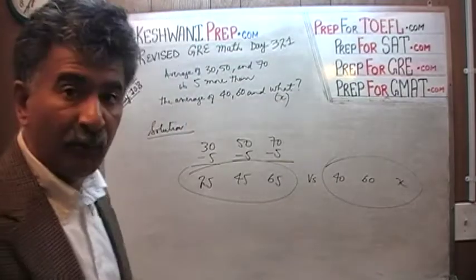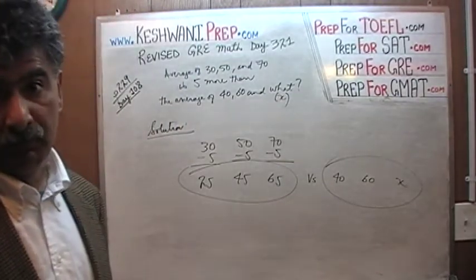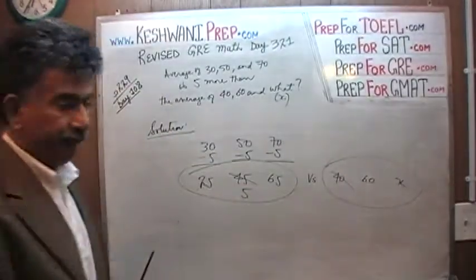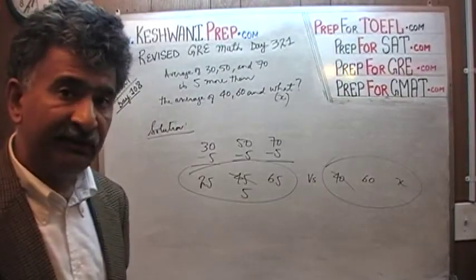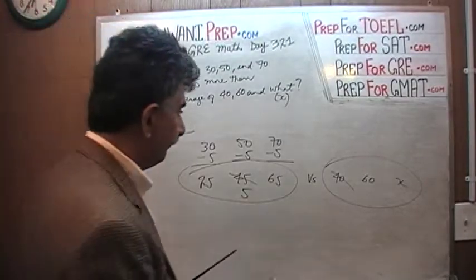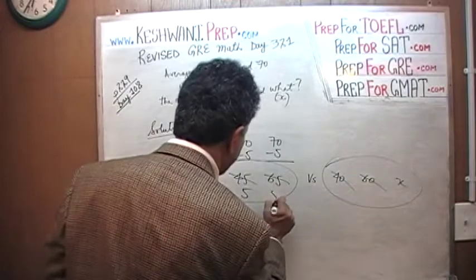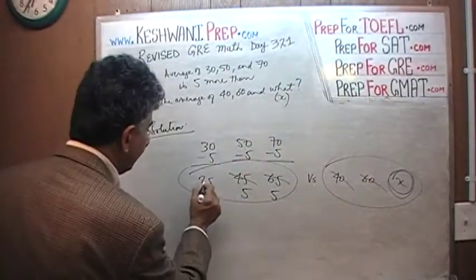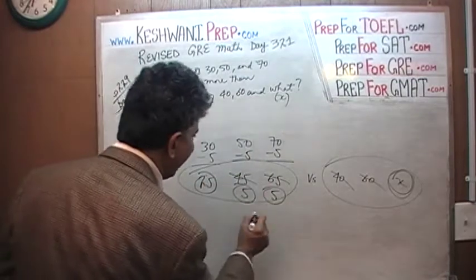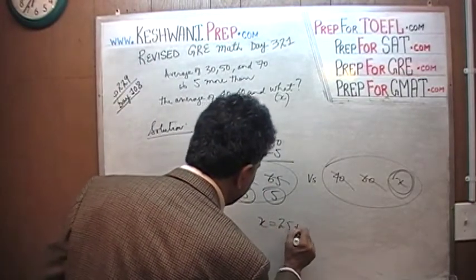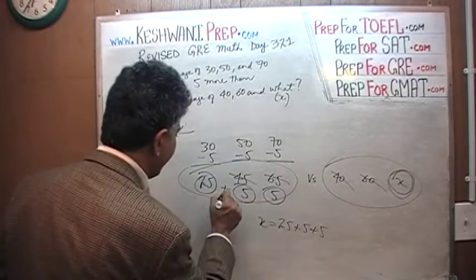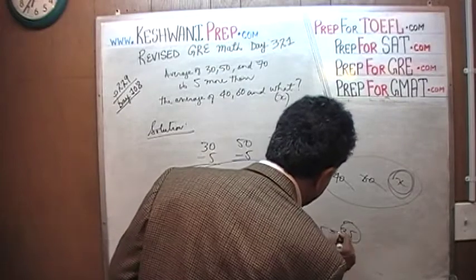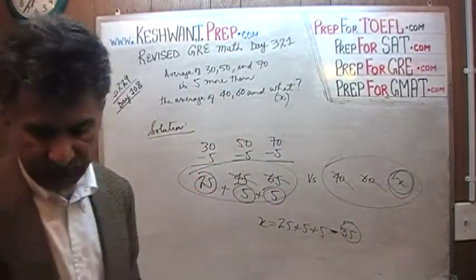We see 40 here and 45 here, so let's subtract 40 from both groups — 45 becomes 5. So X equals 25 plus 5 plus 5. That's 25 plus 10, which is 35. The missing number is 35. That's all, we're done.